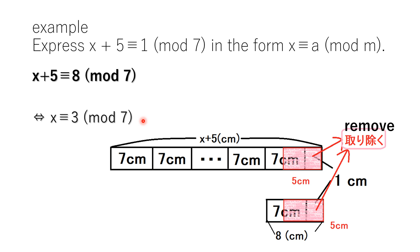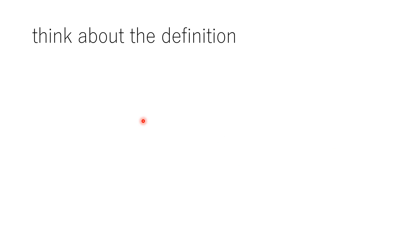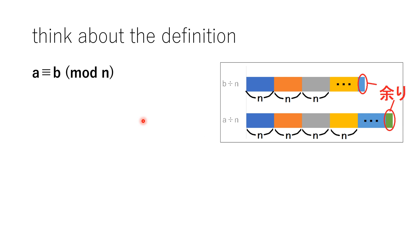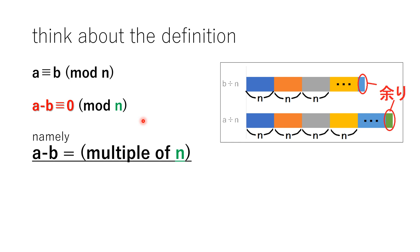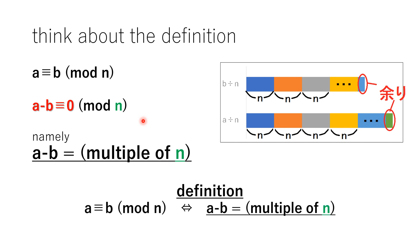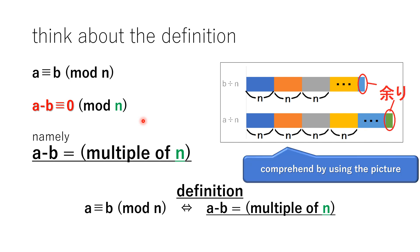Do you understand? Let's move on to the next theme. There are two steps to solve this question, so please remember these steps. Think about the definition. This expression can be transformed if you subtract B from both sides. This means A minus B is a multiple of N — that is the definition. If it's difficult to remember, this picture will help you comprehend it.